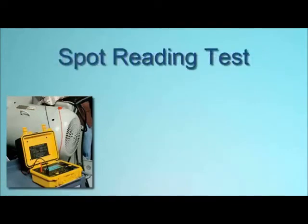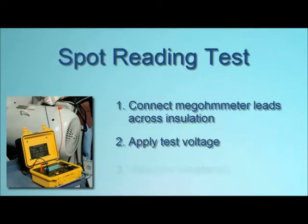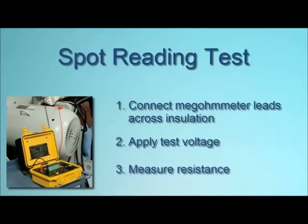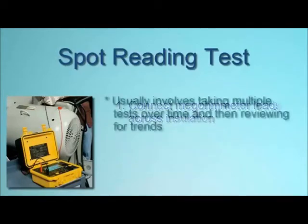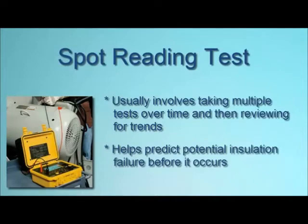The first type of insulation resistance test we'll look at is the spot reading test. This is relatively straightforward: simply connect the megohmmeter leads across the insulation to be tested, apply test voltage for a fixed period of time — typically 1 to 10 minutes — and then take a resistance reading. Spot testing is suitable for a system with small or negligible capacitive effect, for example a short wiring run. A single spot reading test is of limited value, but the results become meaningful when a series of tests, all featuring the same voltage and duration, are performed over time and the results compared. This comparison can help predict a potential insulation failure in time to take corrective action.